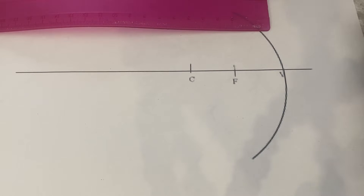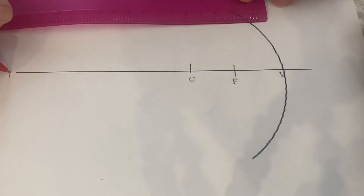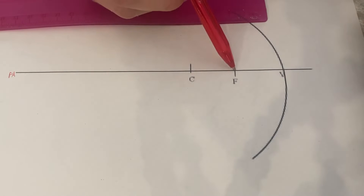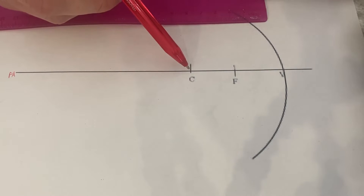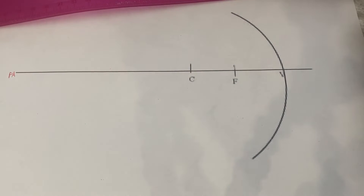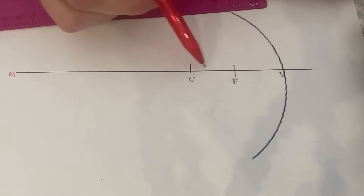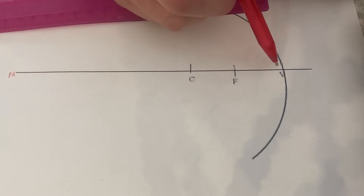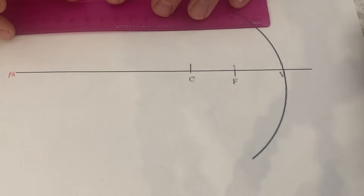Ray one: a ray parallel to the principal axis reflects back through the focal point. Here we have our curved mirror and our principal axis, with a couple of points marked off. F is the focal point, C is the center of curvature — if we extended the mirror out into a giant sphere, that would be the center of that sphere. F is exactly halfway between the mirror and the center of curvature. Where the principal axis crosses the mirror is marked with a V — that is our vertex.